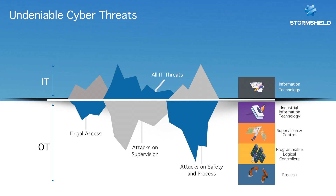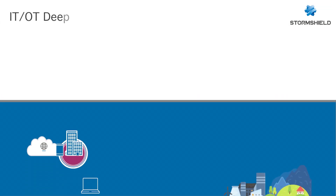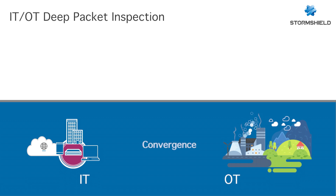Addressing IT threats as well as OT threats is a high priority today. The challenge in securing OT communications comes from the need to provide security controls for both IT and OT, in addition to providing a convergence point between the two networks.